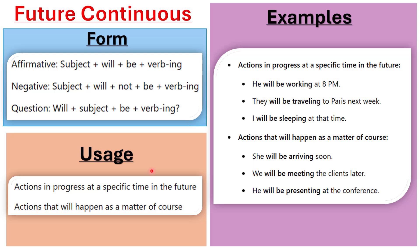The second case is actions that will happen as a matter of course — actions that will happen in the future as a natural consequence. For example, if I called my friend and he said 'I am walking home now,' this means he will be arriving soon. So I can say 'he will be arriving soon' — it's a matter of course since he is already walking home.